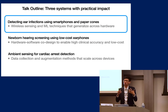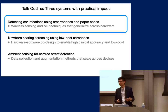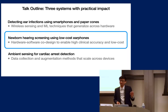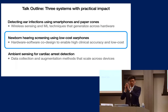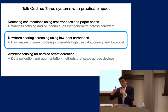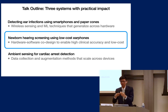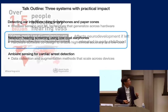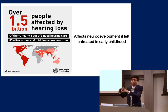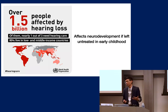Now let's move to the second system, also involving the ear. Even focusing on one organ, you can invent many impactful technologies by deeply understanding its biology and physiology. About 1.5 billion people worldwide are directly or indirectly affected by hearing loss, and 80% reside in low- and middle-income countries.